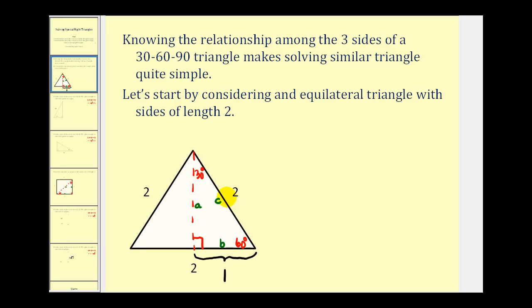Let's start off by considering an equilateral triangle with each side of length two. Remember, for an equilateral triangle, all of the angles would be equal to 60 degrees. Next, you'll notice that in red, I dropped a perpendicular bisector from one of the angles, forming two right triangles. Let's consider the triangle on the right. This angle here would now be 30 degrees, so we have a 30-60-90 right triangle.